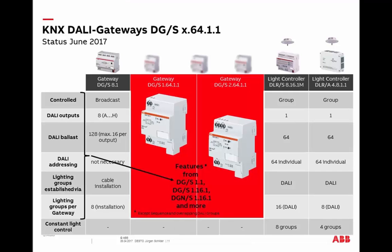We will replace these three devices — DGS 1-1, DGS 1-16-1, and DGS 1-16-1 with emergency lighting — by two new components: DGS 1-64-1-1 with one DALI output, and DGS 2-64-1-1 with two independent channels. In principle, very similar devices and functions — the second device simply has two channels. We cover all functions from the existing three devices and have more features. One small note: the sequence function and overlapping DALI groups, which existed in the DGS 1-16-1, are not available in the new devices. However, as you will see with the new light grouping options, this is not a real disadvantage.